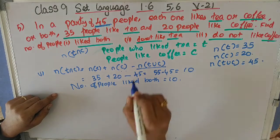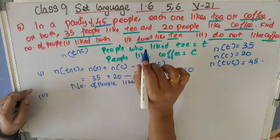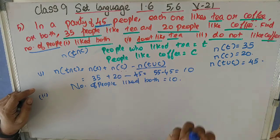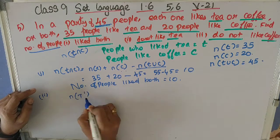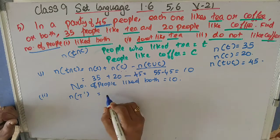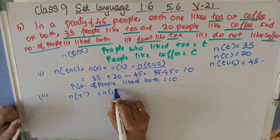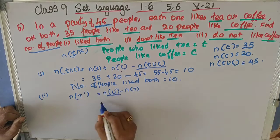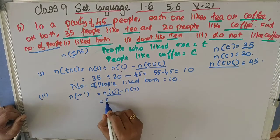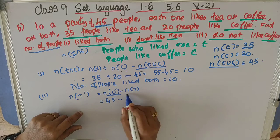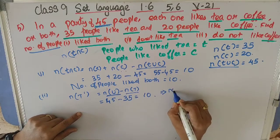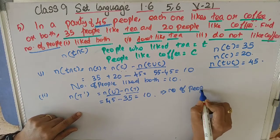Now we need to find how many people do not like tea. The number of people who do not like tea is N of T dash, which equals N of U minus N of T. We consider N of T union C as N of U, so that is 45 minus 35 equals 10. Therefore, the number of people who do not like tea is 10.